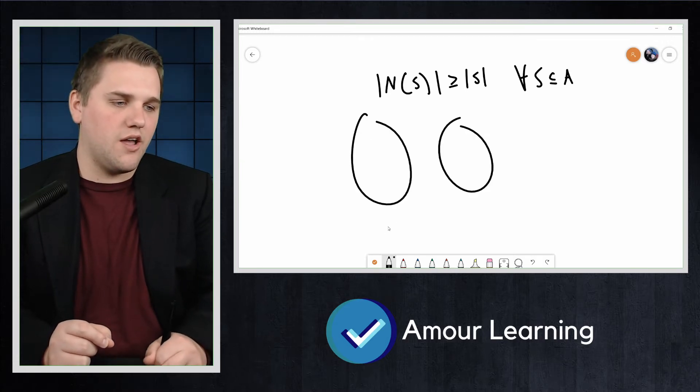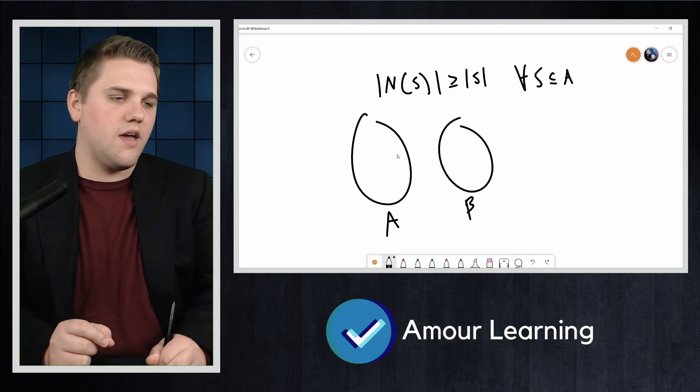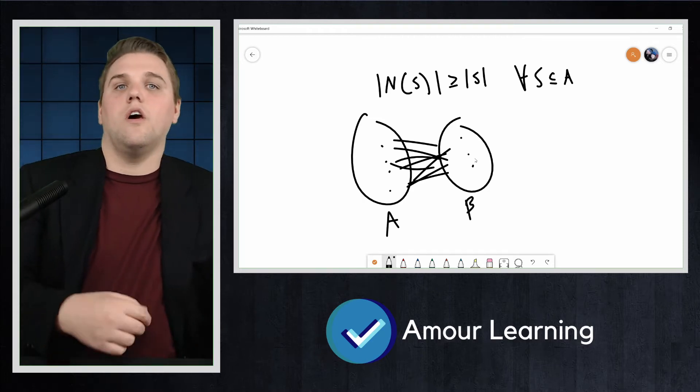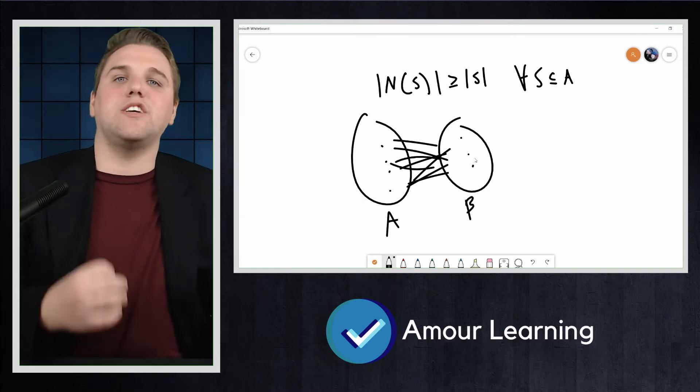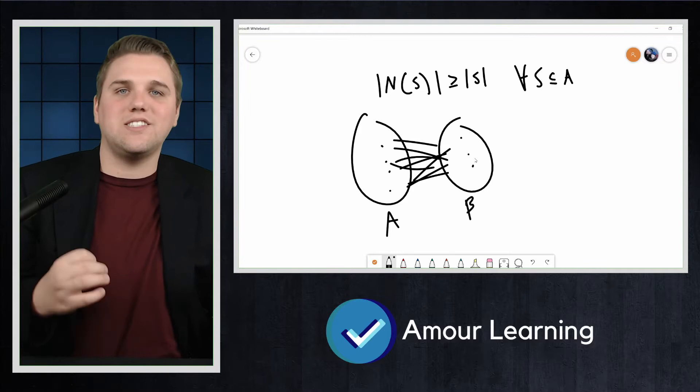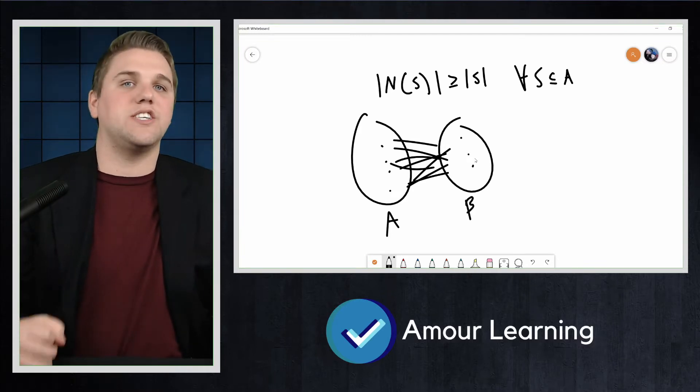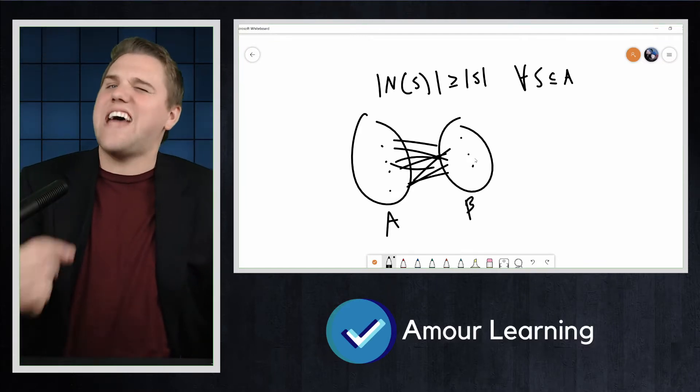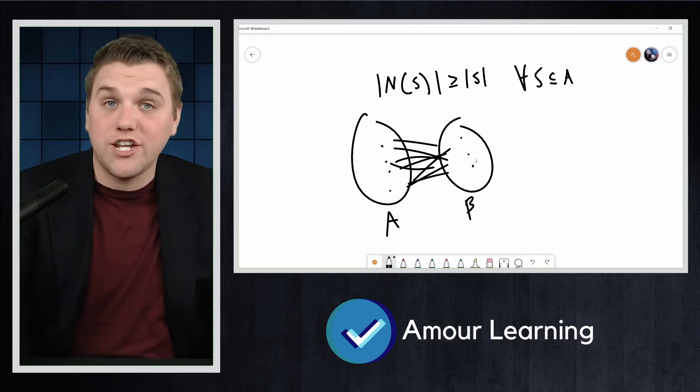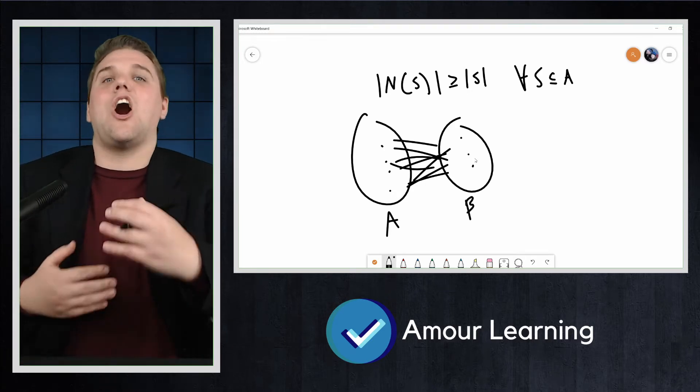We have two partitions here, A and B, and this is a bipartite graph. In this case, every set of vertices has at least as many neighbors as vertices in that set. Does that mean there is a matching? Again, this is the converse.